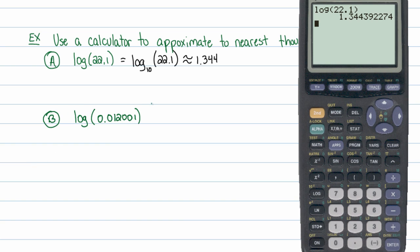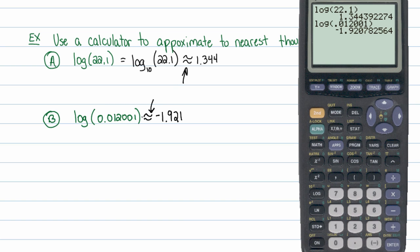Let's try one last one: log of 0.012001. Again, this is log base 10. Just type log of 0.012001 into the calculator and hit enter. Rounding to the nearest thousandth, it's roughly equal to negative 1.921. Make sure you use the approximately-equal-to notation on both of these, because it's not exactly equal — it's only approximately equal.